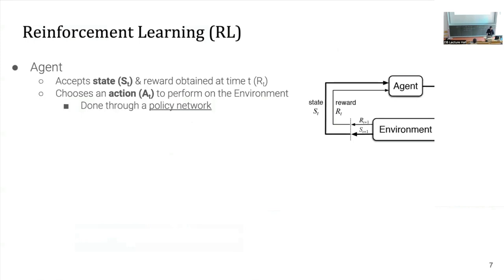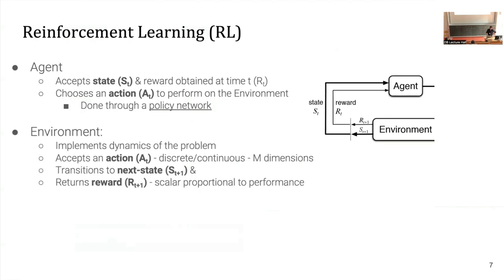A bit more on the terminology. We have an agent, which is a function that accepts the state at a given time and provides an action to perform in the environment — all with the goal of maximizing future reward. A reward is given by the environment: it takes an action, transitions to the next state, and returns a scalar signal proportional to performance. For example, landing the lunar lander between the flags with zero velocity gives a high reward.